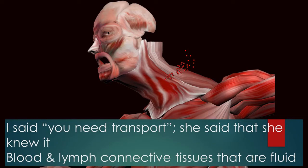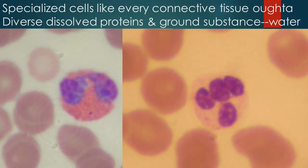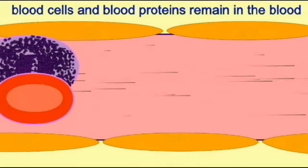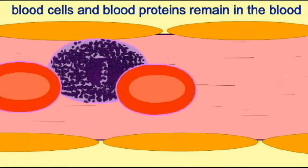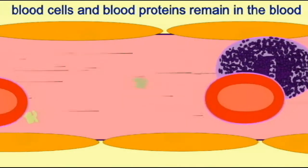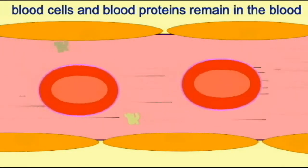I said you need transport, she said that she knew it. Blood and lymph — connective tissues that are fluid. Specialized cells like every connective tissue ought to have diverse dissolved proteins and ground substance water.